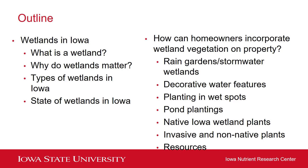For the second part, some of the ways to incorporate wetland vegetation I'm going to go over include rain gardens and stormwater wetlands, decorative water features, planting in wet spots, planting around ponds or potentially even in ponds. I'm also going to go over what are some of the native Iowa wetland plants you could add to your landscape, and what are some of the plants you want to avoid — invasive and non-native plants you don't want to plant but also want to keep an eye out for to remove if you see them coming into your wetland area. Finally, I'll wrap up with resources you can use to find different plant species as well as resources for implementing these different wetland practices.